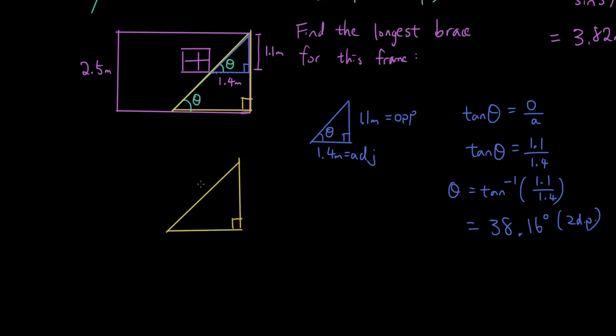So drawing that separately, I have the longest brace, let's call that H. I have the angle now is 38.16, and I have the height of the wall which is 2.5 meters.